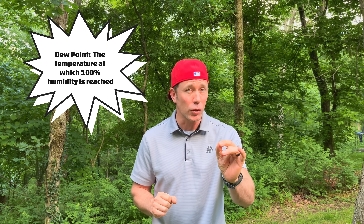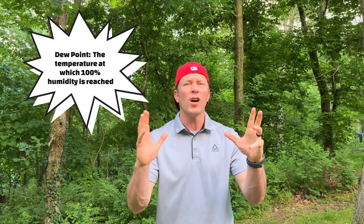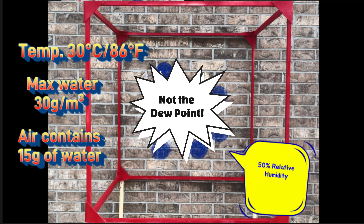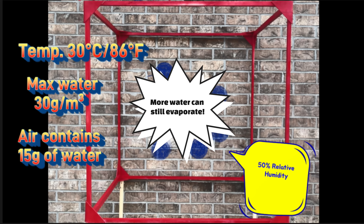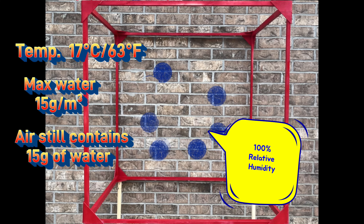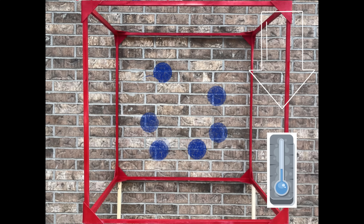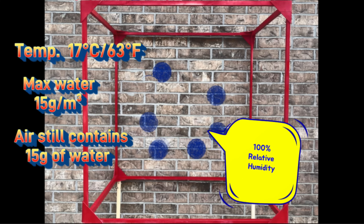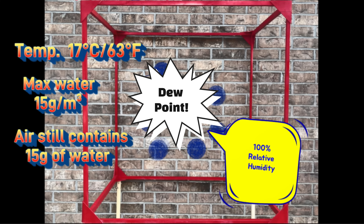Dew point is the temperature at which a particular sample of air reaches 100% humidity, also known as the saturation point. Going back to that 30 degrees Celsius day with 50% humidity and 15 grams of water in the air — at that point, the air sample was not at its dew point, and more water could still evaporate into the sample. But if overnight the temperature started to drop, once it hit 17 degrees Celsius the air would reach its saturation point, since 15 grams of water is all that will stay in the vapor state at that temperature. If the temperature dropped any more, some water would condense and we would wake up to fog or dew. So 17 degrees Celsius would be the dew point for this particular sample of air with 15 grams of water in the vapor state.